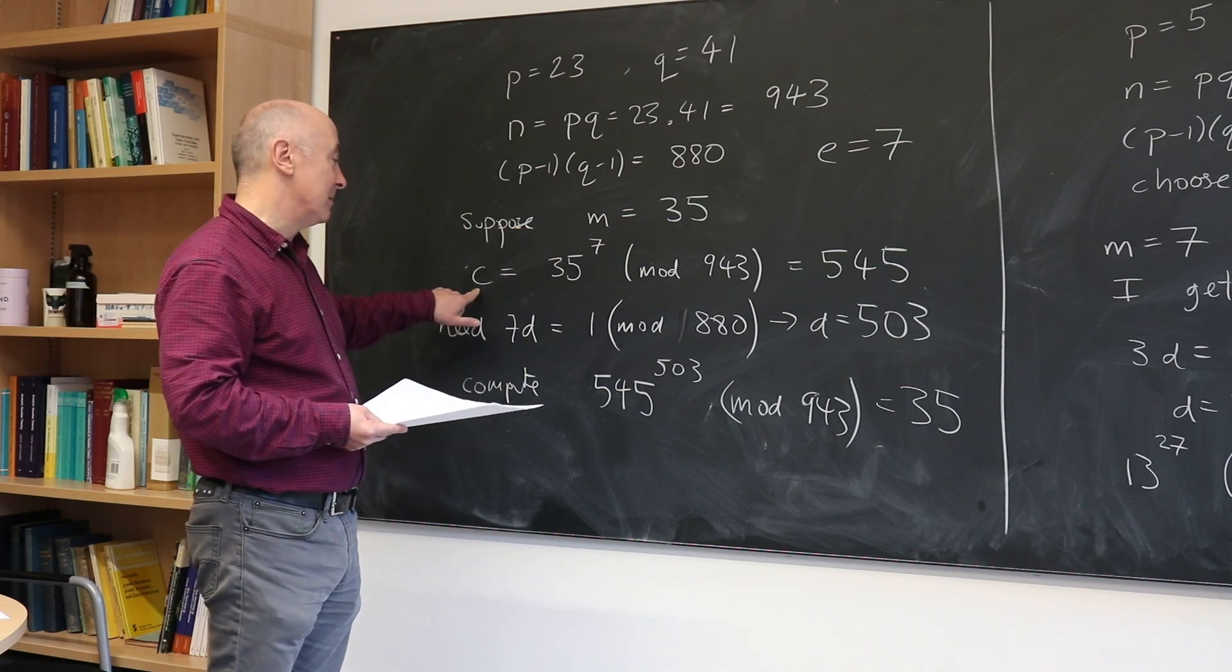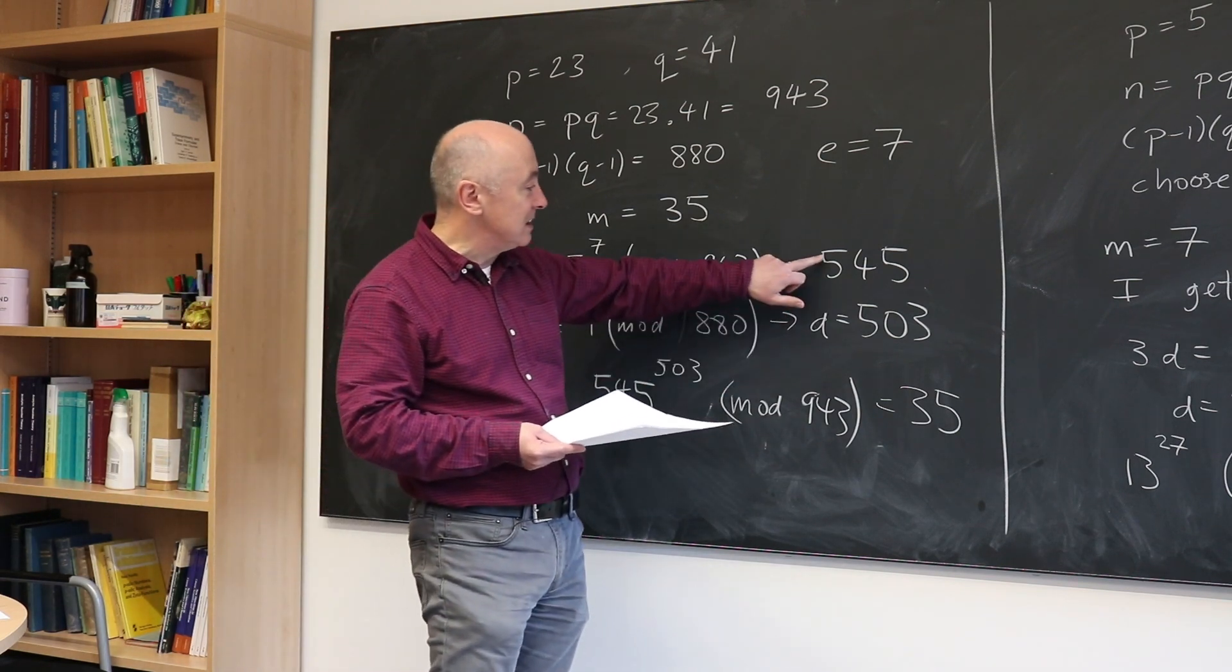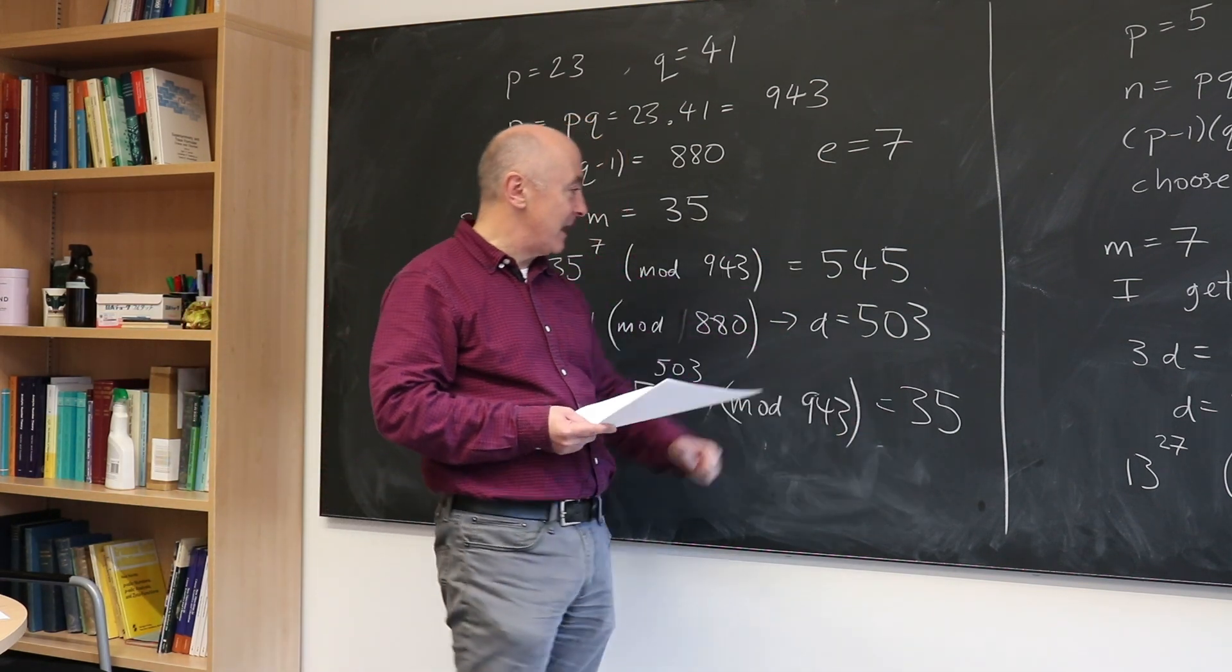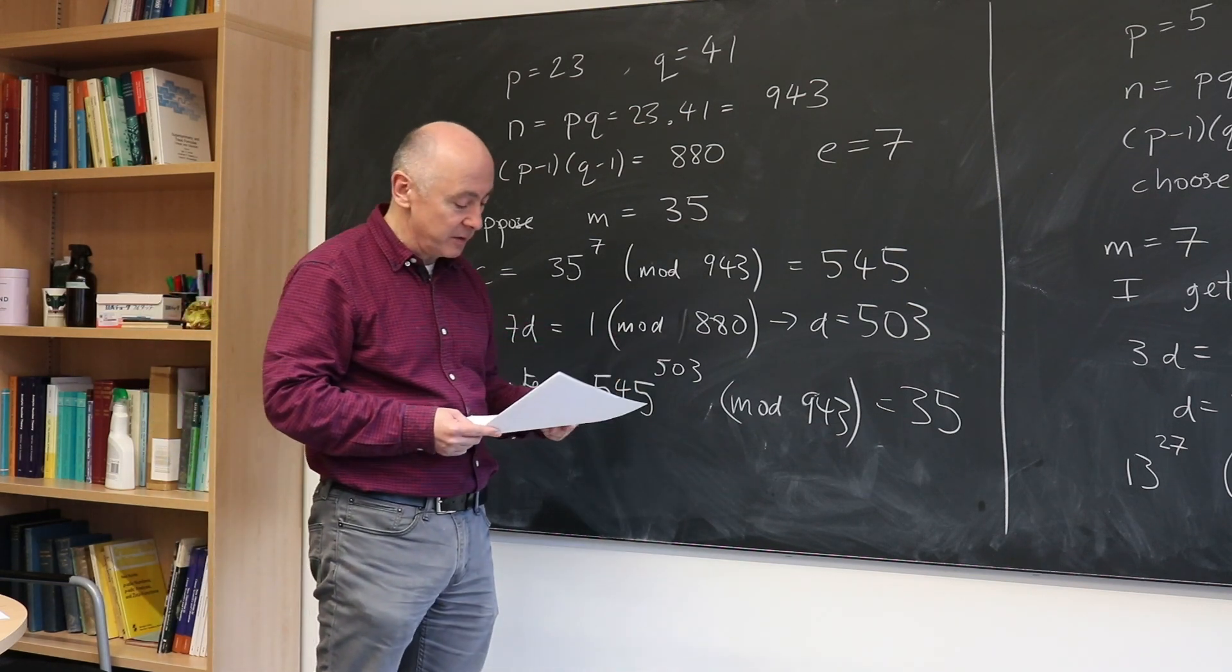They can send me that. I get the number. They send me the number C, which again, anyone can intercept. But it's only me who can decrypt this to get back to 35, because to do that you need to know P and Q, and only I know those.